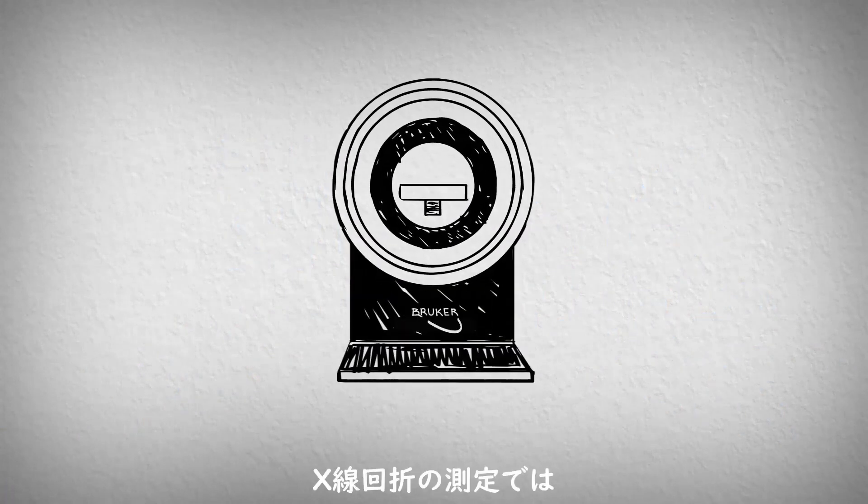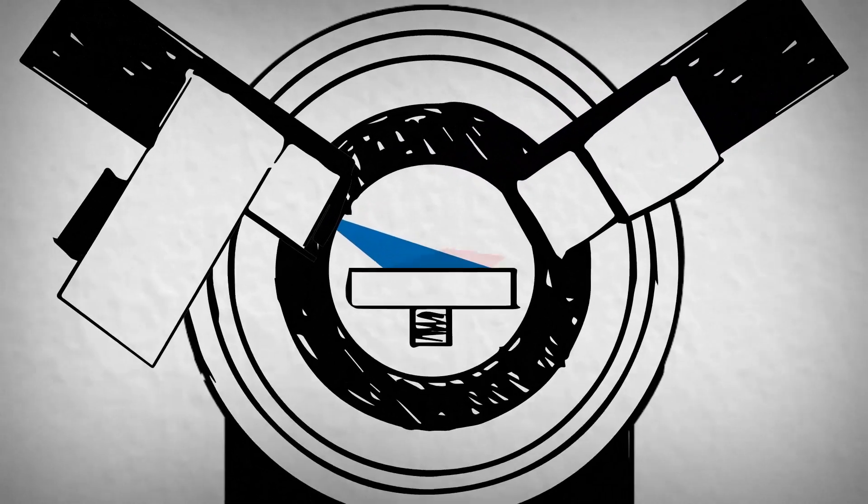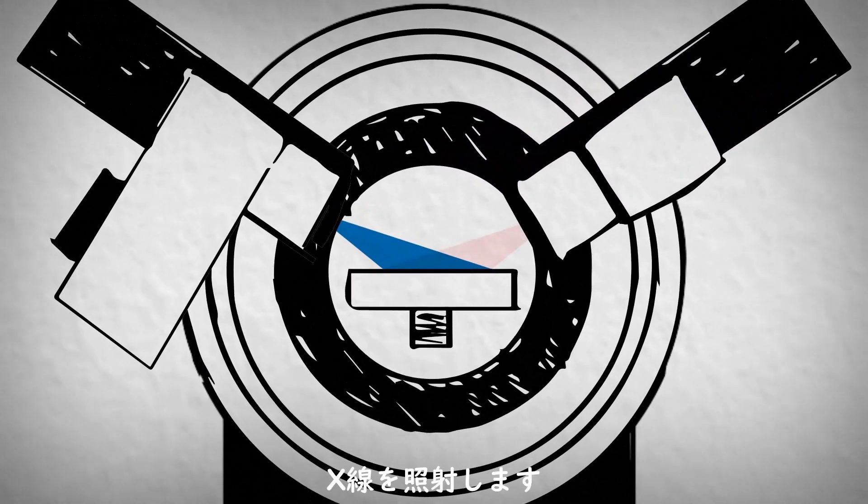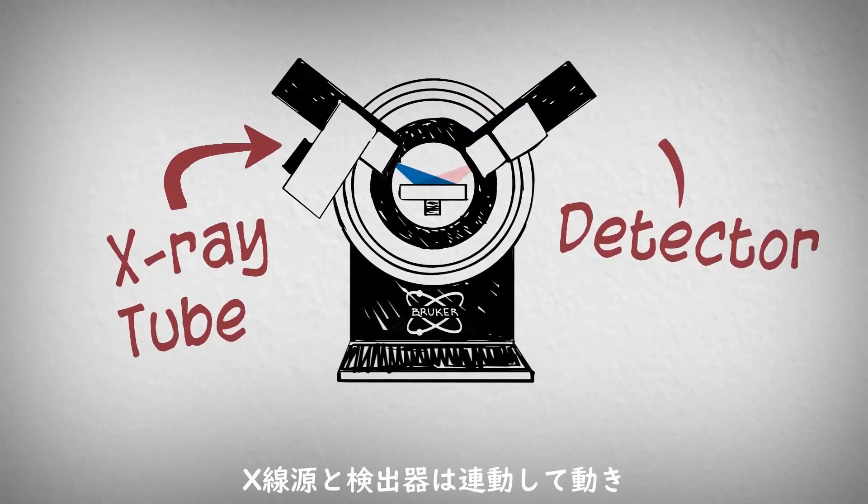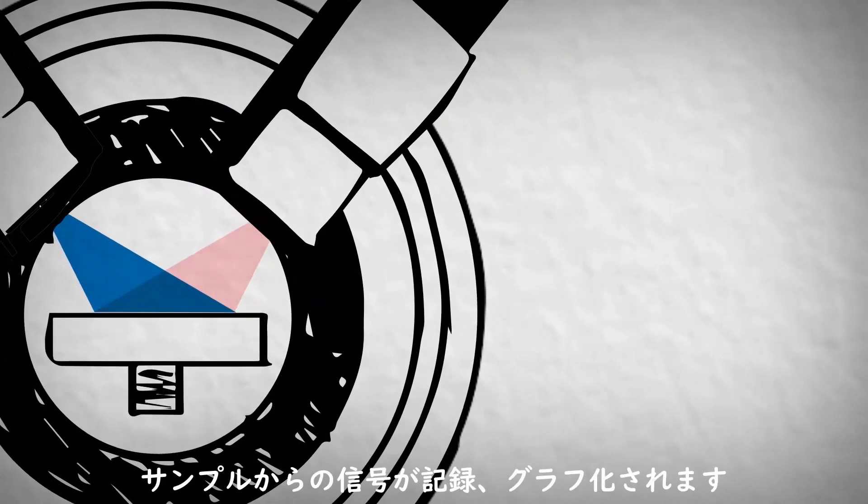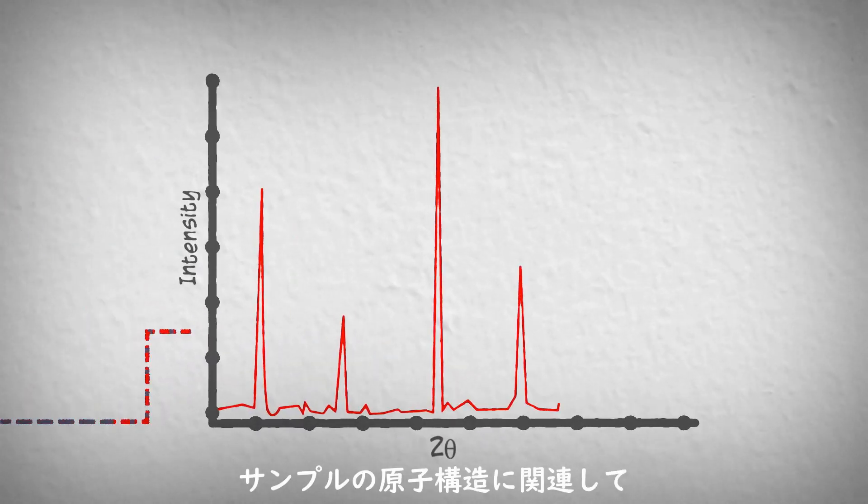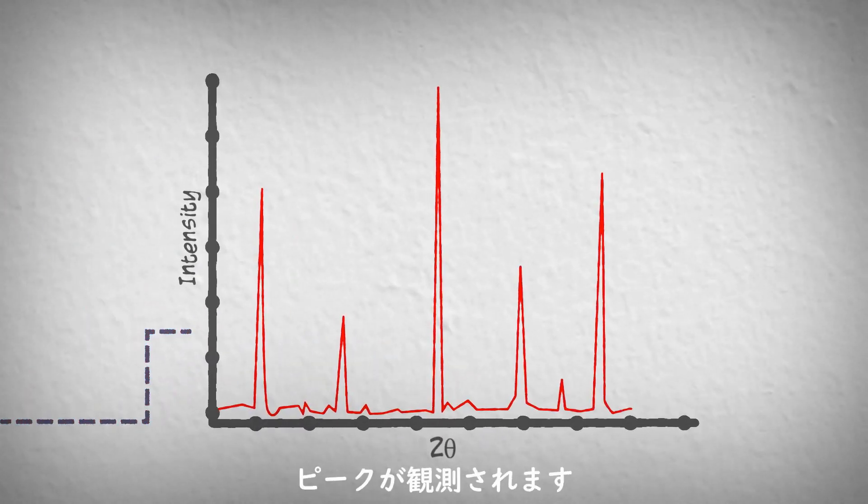In an X-ray Diffraction experiment, a sample is placed into the center of an instrument and illuminated with a beam of X-rays. The X-ray tube and detector move in a synchronized motion. The signal coming from the sample is recorded and graphed, where peaks are observed related to the atomic structure of the sample.